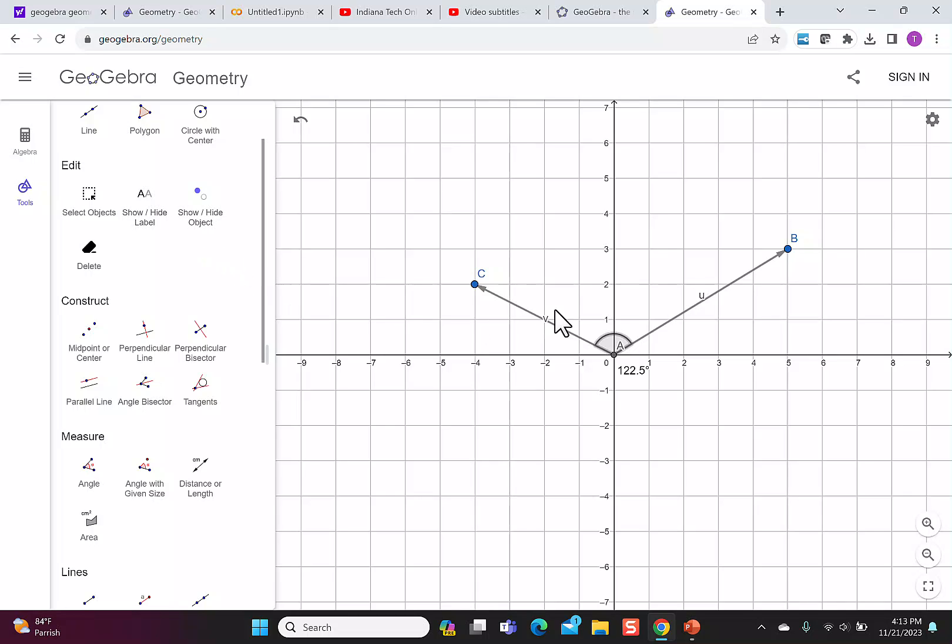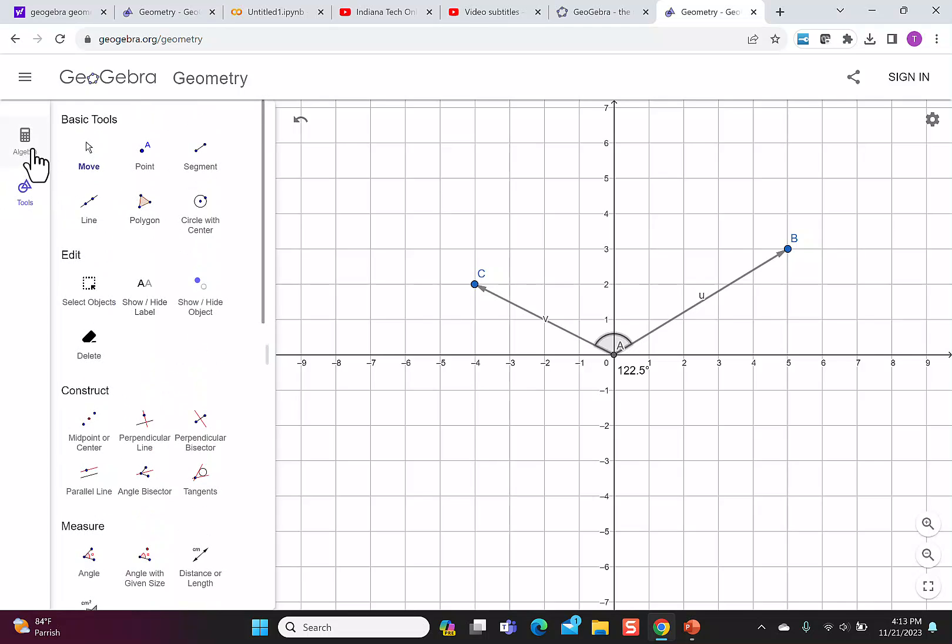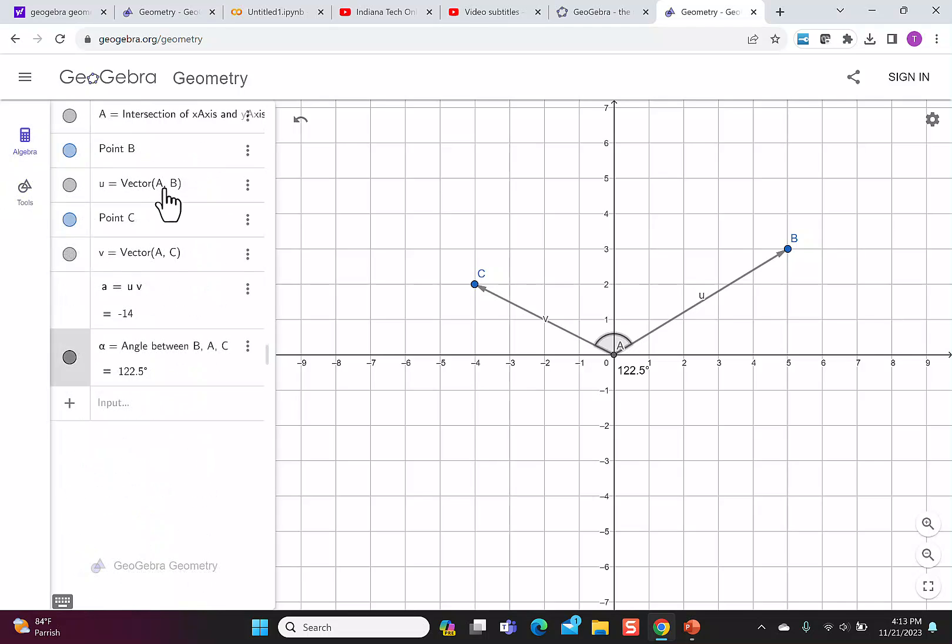What's also nice is once you have this all done, you can change the values. You can change the values by going back to algebra and then picking the point and maybe changing the point value. That will update the dot product and it will also update the angle.